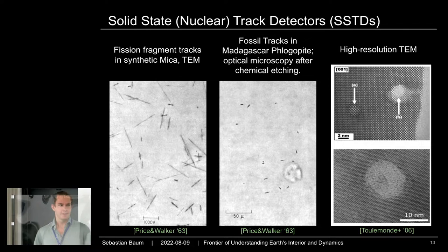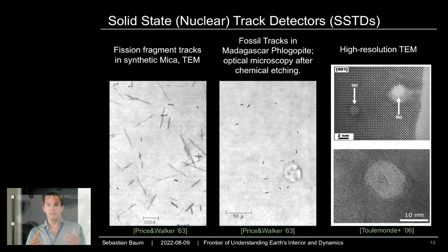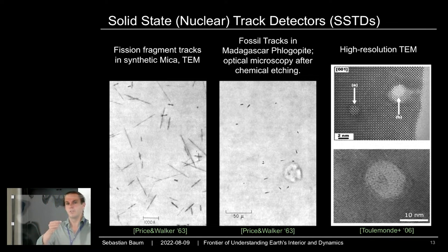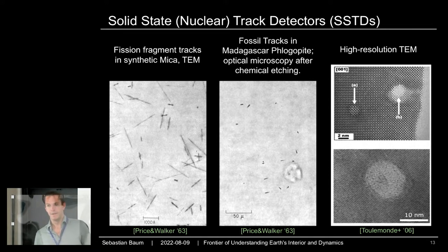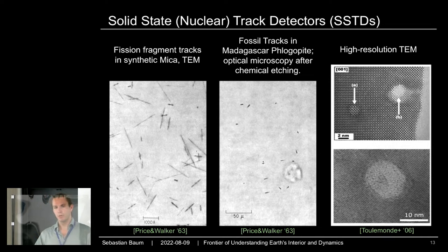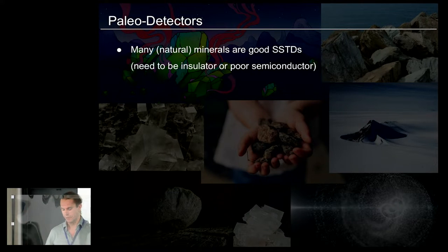So what is the idea of paleo detectors? Dark matter could scatter off one of the atomic nuclei in an old mineral, kick that nucleus, give it a small recoil. As that nucleus grinds to a halt, it makes a damage track, and you can then read out this damage track with microscopy techniques. The magic is that once you make these tracks, they're there forever — so you could have a detector that has been recording information for hundreds of millions of years.